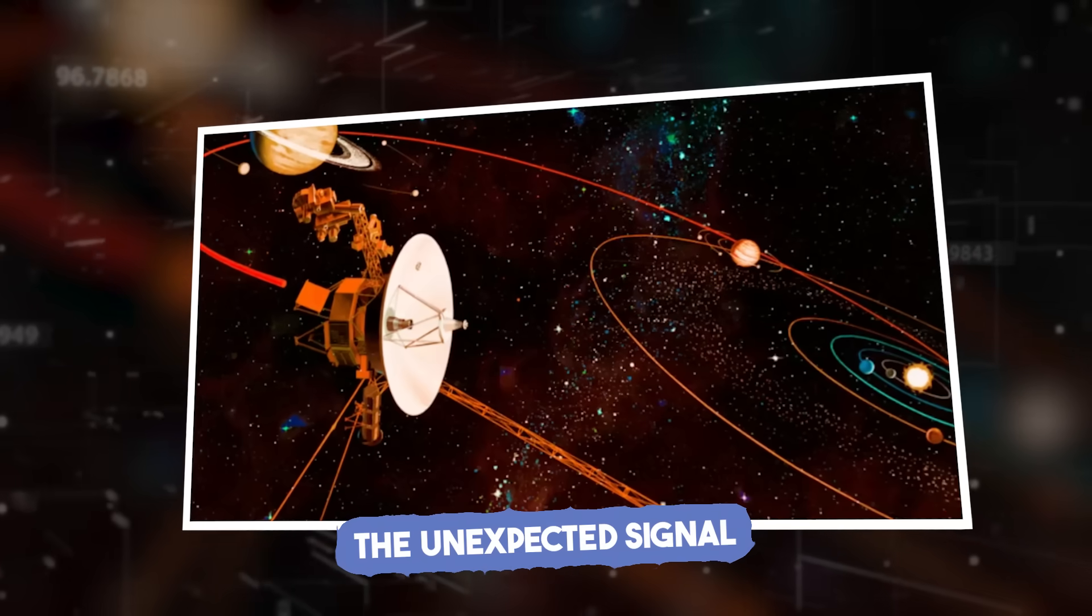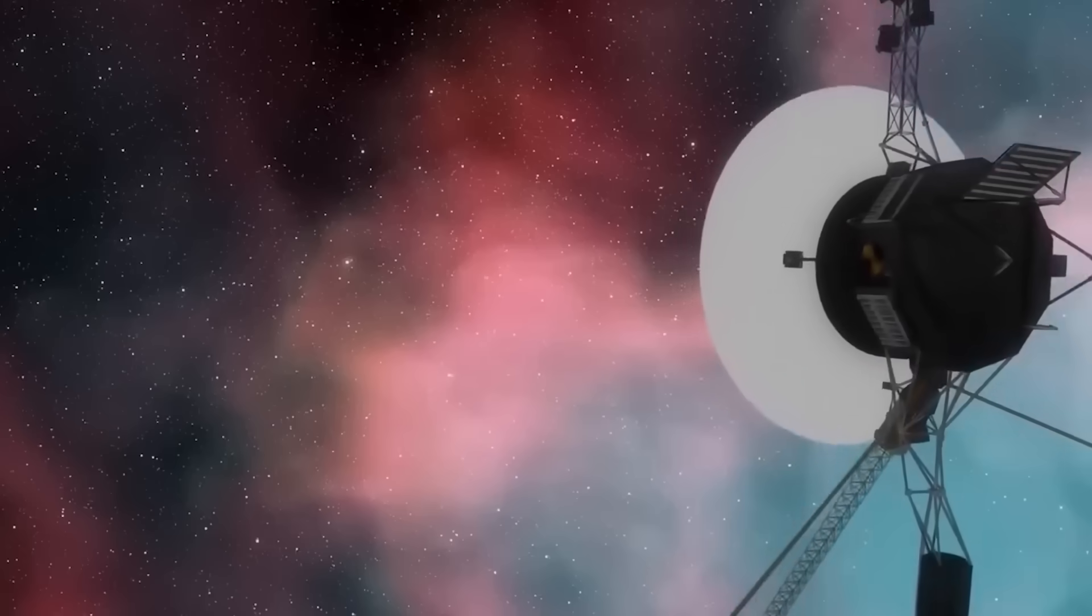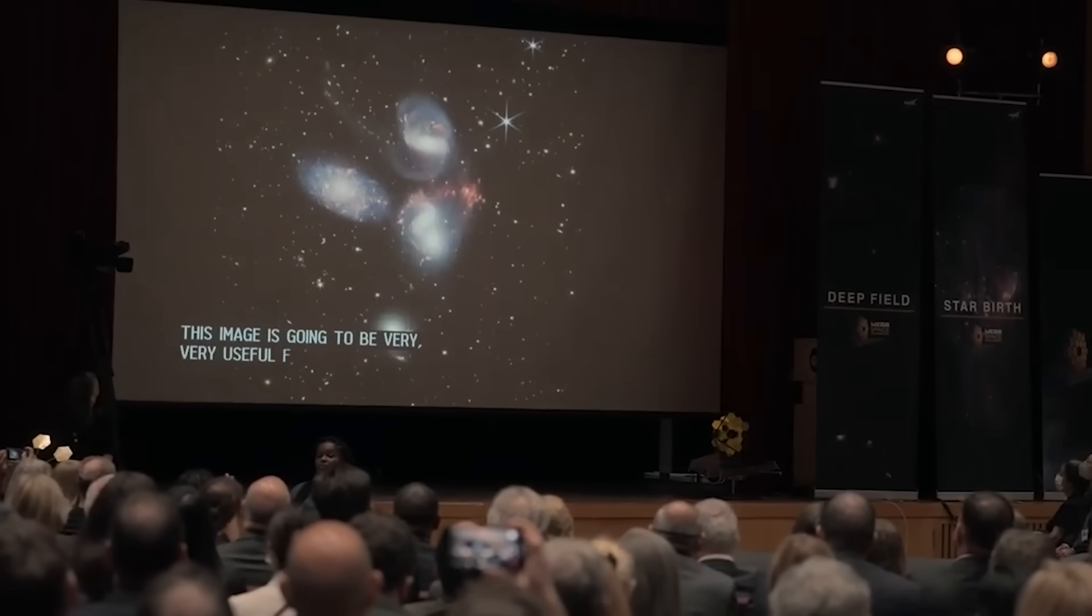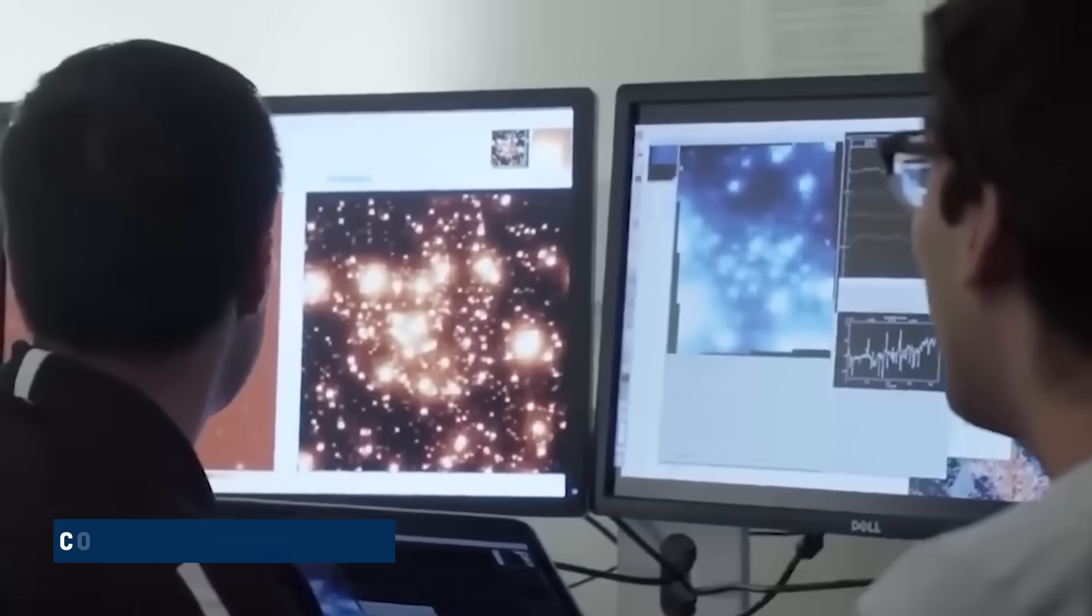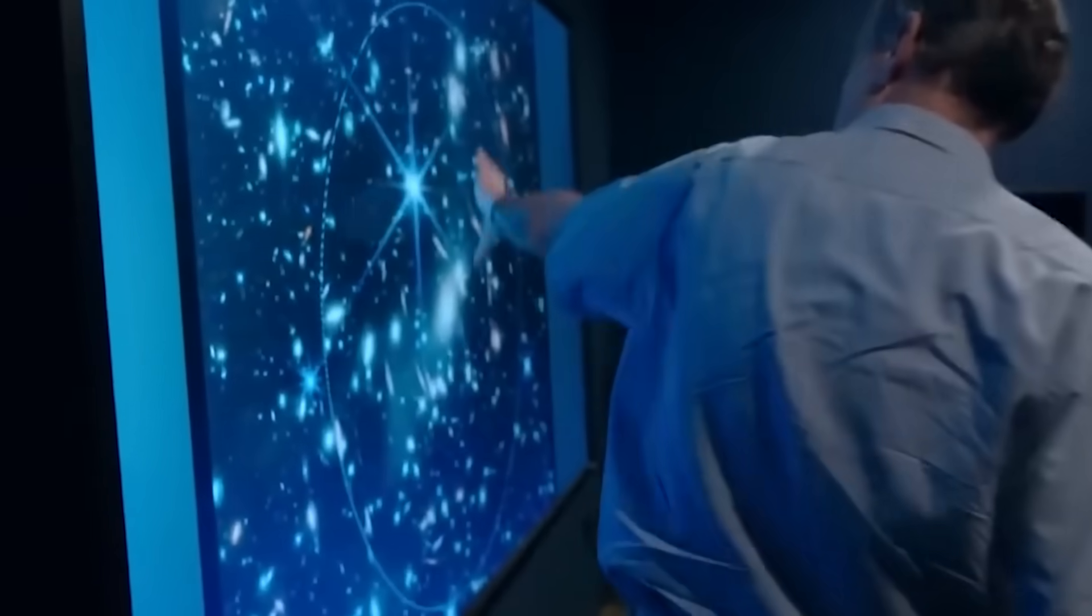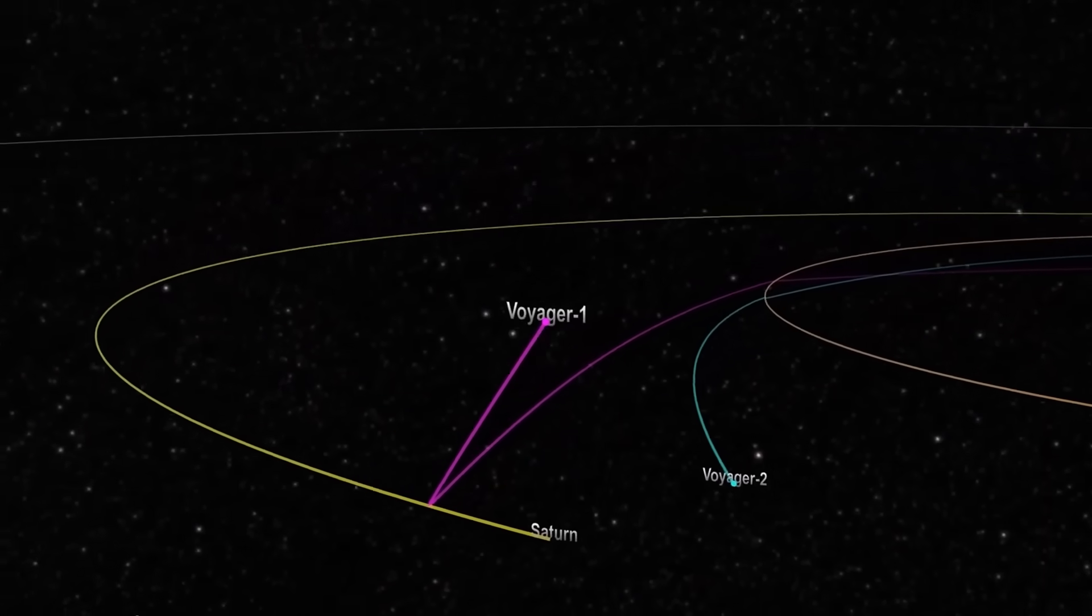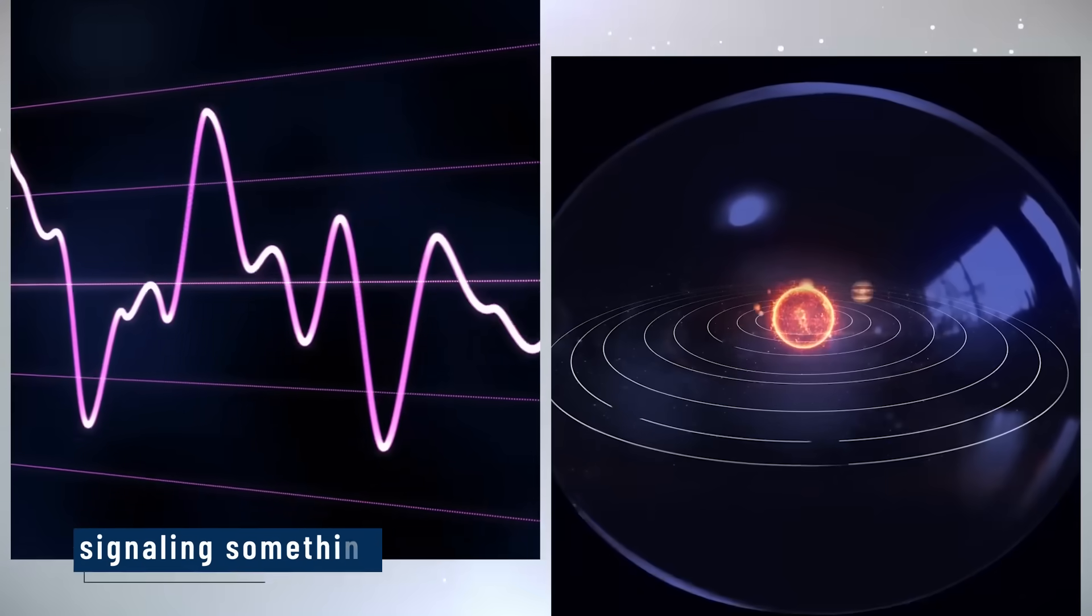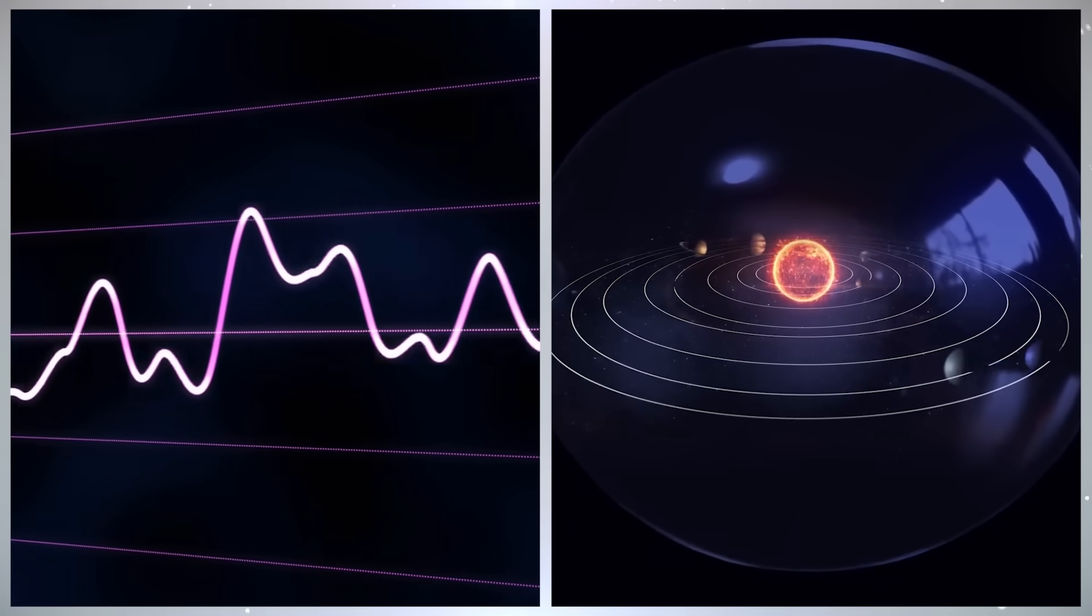The unexpected signal. Voyager 1's recent transmissions stunned scientists worldwide. Suddenly, its instruments recorded abrupt and dramatic changes in cosmic ray intensities, particles with energies far beyond anything seen before. These cosmic rays, mostly blocked by the sun's heliosphere, surged unexpectedly, signaling something had changed in the sun's protective bubble.